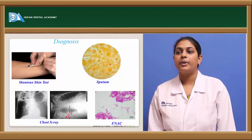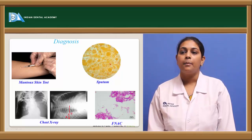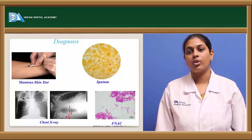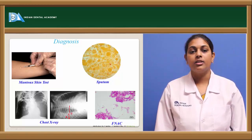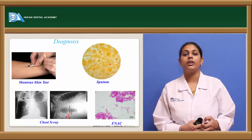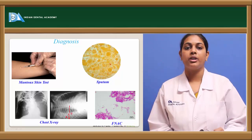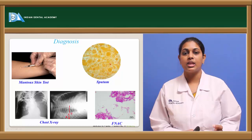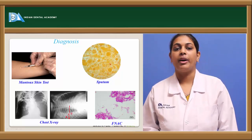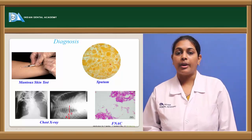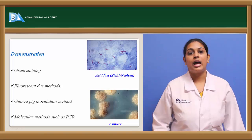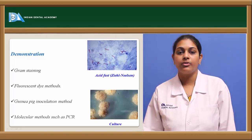Coming to sputum culture: there is presence of filamentous rod-like bacilli — the tuberculosis bacilli. Coming to FNAC: in a lesion such as caseation necrosis, the fluid is aspirated under sterile conditions and stained with hematoxylin and eosin or Gram stain. Presence of mycobacteria under microscope in FNAC confirms diagnosis. Gram staining from sputum or smears from the infected area is one of the diagnostic aids.